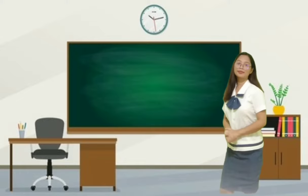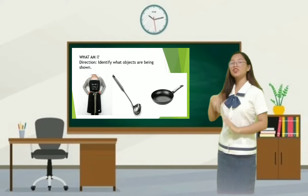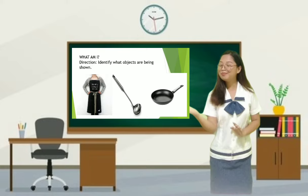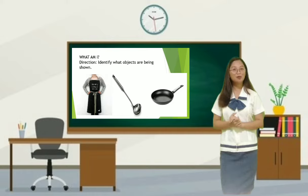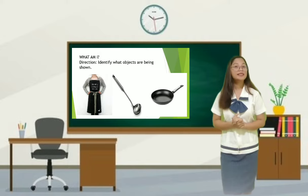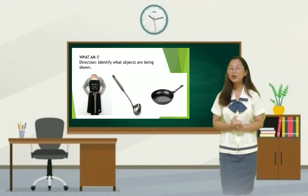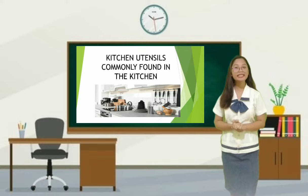As you can see on the screen, there are three objects. Who will volunteer to identify the first object? Maria — very good, it is an apron. How about the second object? Anna — it is a ladle. And the third object? Rose — very good, it is a frying pan. Those three objects have something to do with our lesson for today.